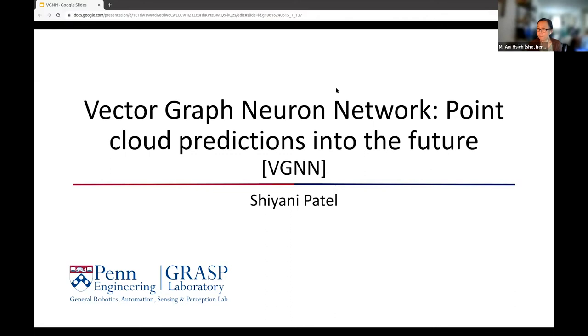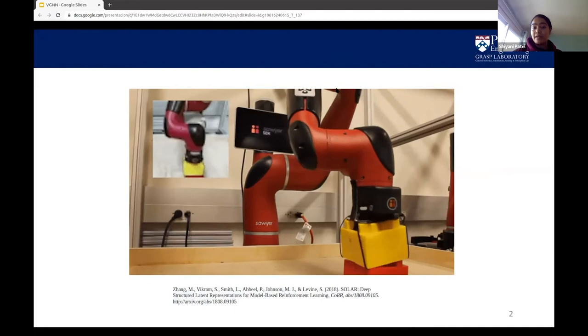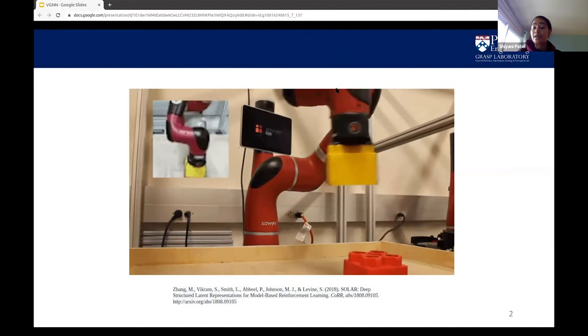All right, can you guys see my screen? I will be talking about Vector Graph Neural Network, VGNN for short, it is a pipeline for predicting point clouds. To begin this presentation, I will show you a GIF. This GIF shows a robot stacking blocks. This tells us that the robot is able to make confident predictions on the object and the environment. This ability to predict is important because it allows a robot to confidently do a task in an unforeseen environment.